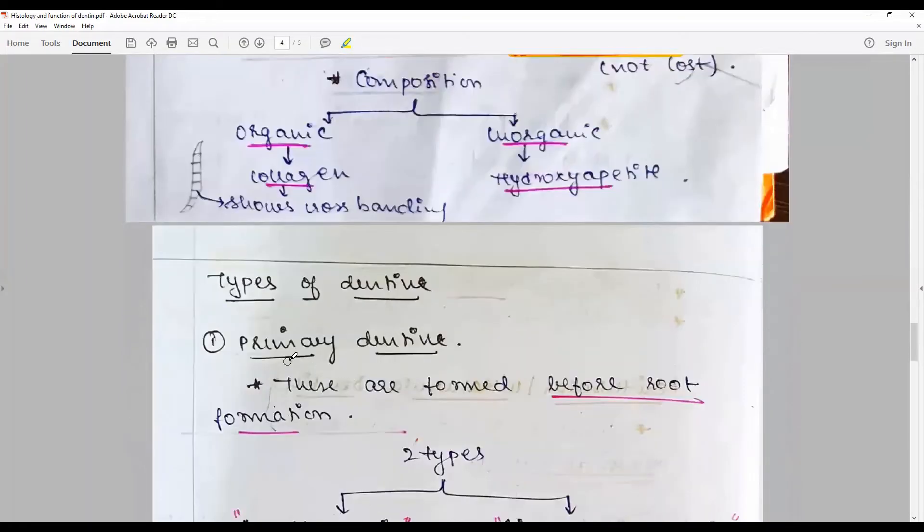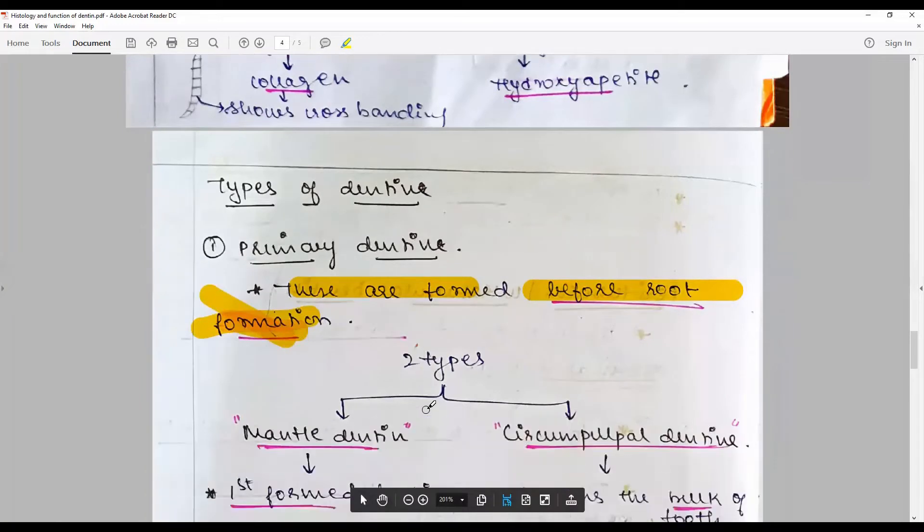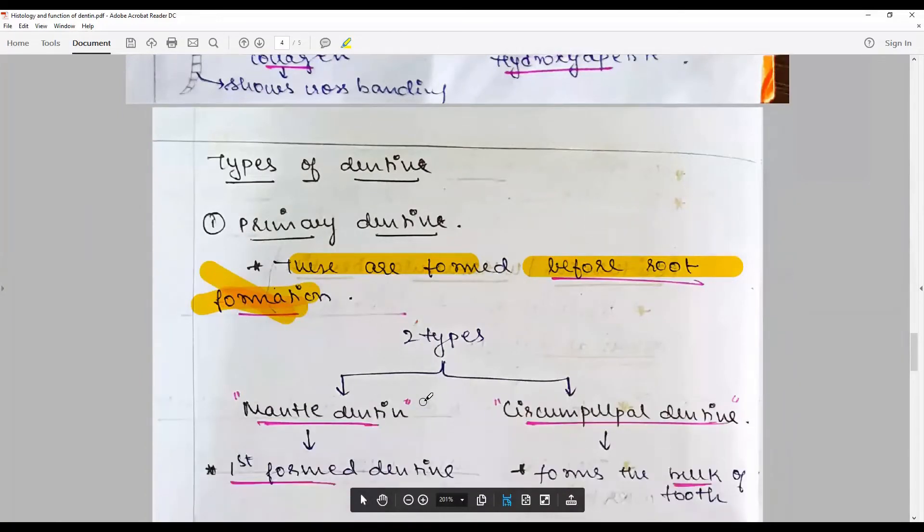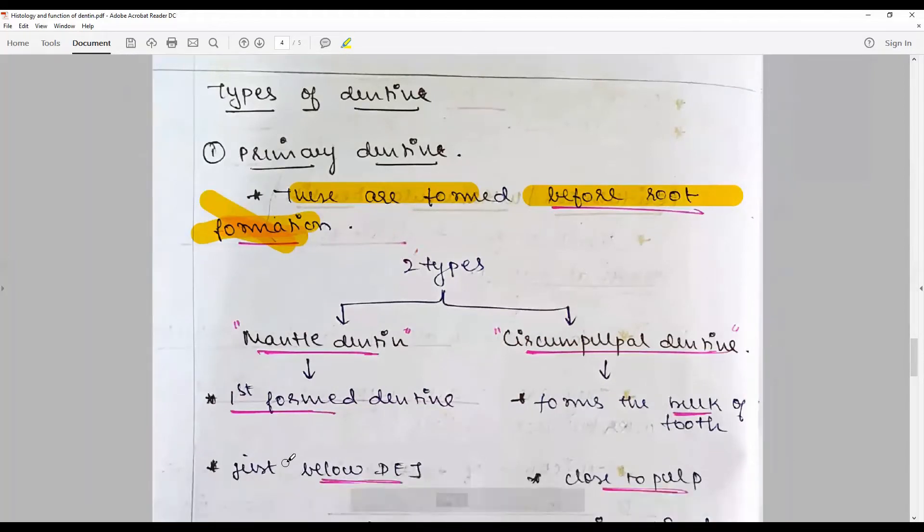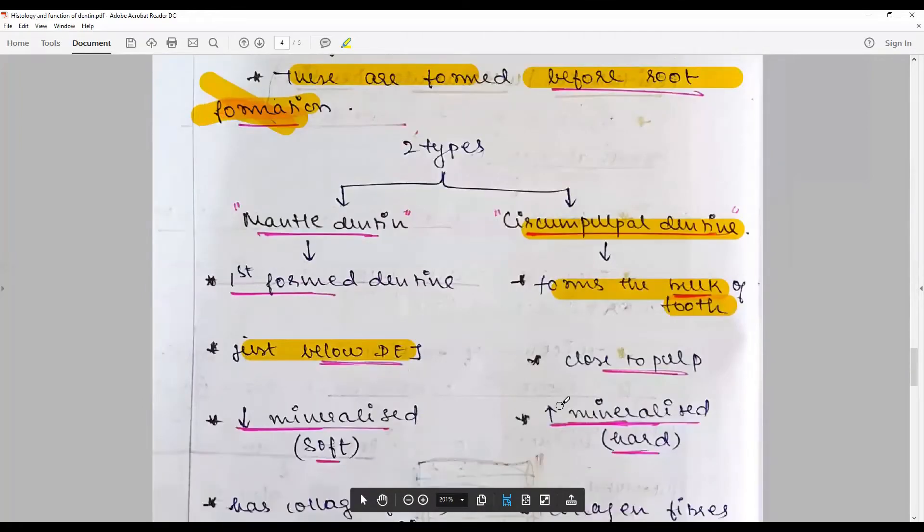Types of dentin: Primary dentin is formed before root completion. They are of mantle dentin, which is the first formed dentin just below the DEJ, and circumpulpal dentin, which forms the bulk of the tooth below the mantle dentin and close to the pulp.